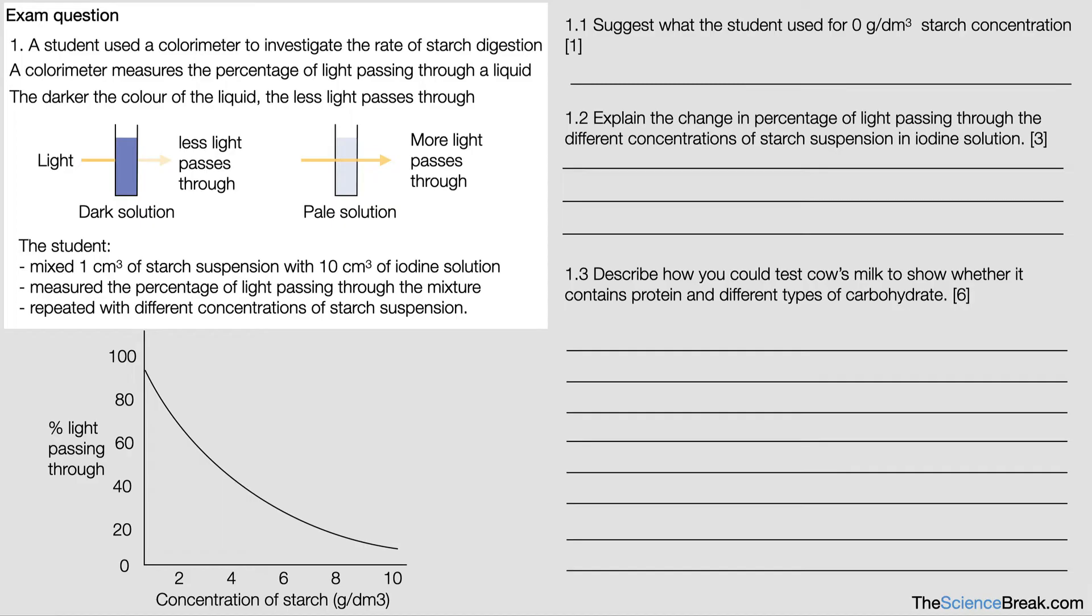It says the student mixed one centimeter cubed of starch suspension with ten centimeters cubed of iodine solution. The student then measured the percentage of light passing through the mixture and then repeated with different concentrations of starch suspension.